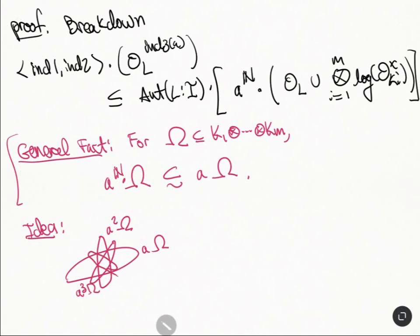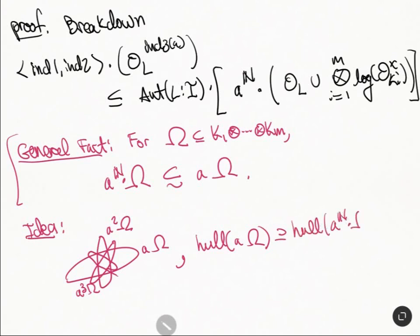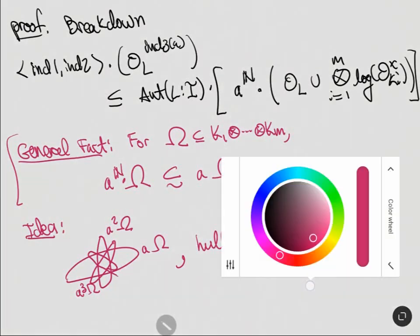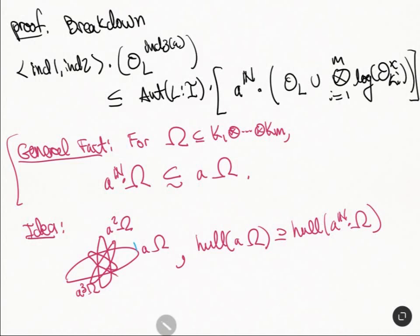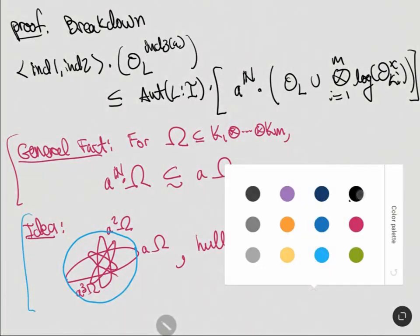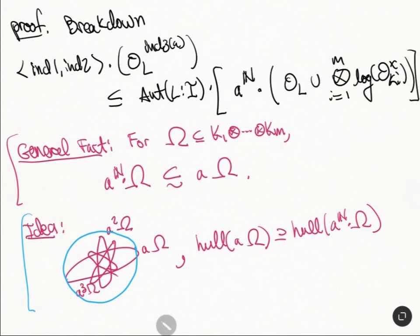I'm showing it's not a polydisk, so I'm writing it as a polydisk region. These two things are the same if and only if their hulls are the same. You can note that the hull of a·Omega contains the hull of a^n·Omega. This is what we want, and you can see this because the hull looks like some disk here — we can prove this rigorously, but this is the picture.